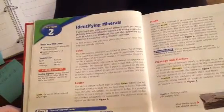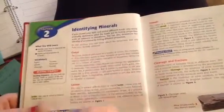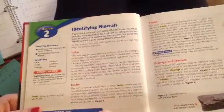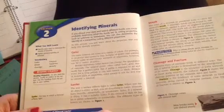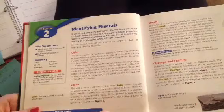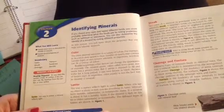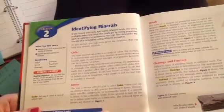If you close your eyes and taste different foods, you could probably determine what foods they are by noticing properties such as saltiness or sweetness. You can also determine the identity of a mineral by noting different properties. In this section, you will learn about the properties that will help you identify minerals.